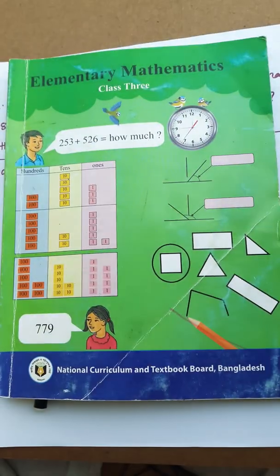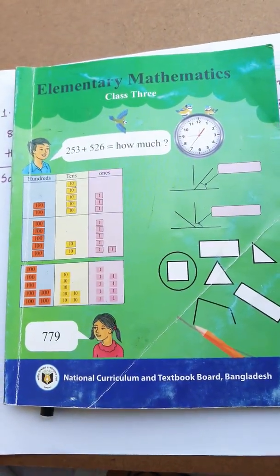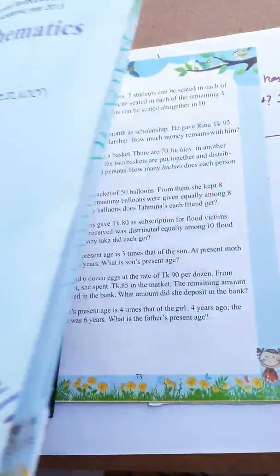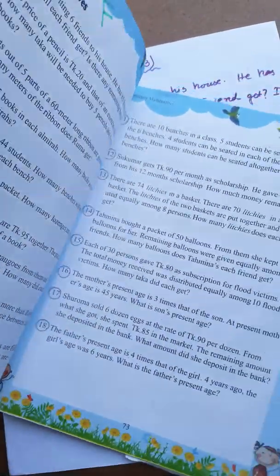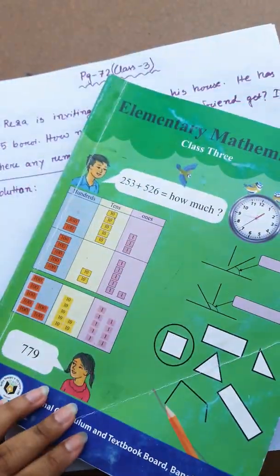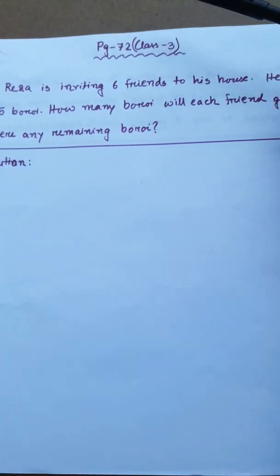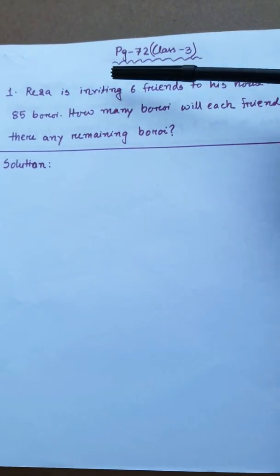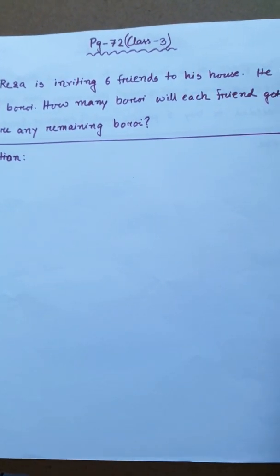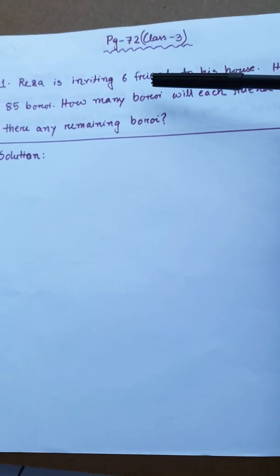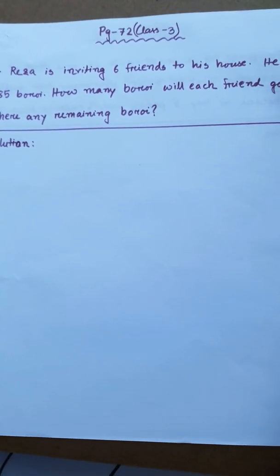Welcome to School 2020. This is elementary mathematics class 3a, page number 72 and 73 — we will do these math problems. This is the first problem: Reza is inviting 6 friends to his house. He has 85 boroy. How many boroy will each friend get?